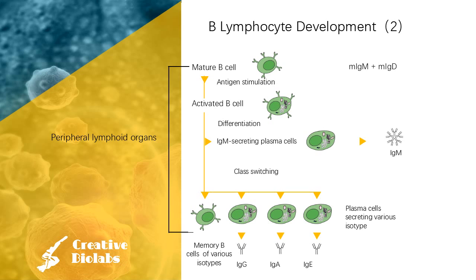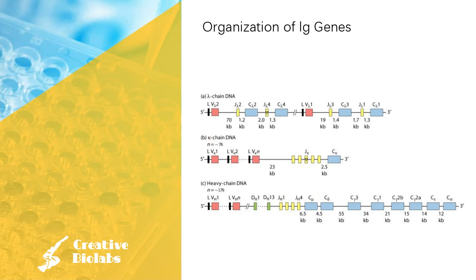Each cellular clone synthesized in a germinal center produces isotypes of the same class specific for a given antigen. During the evolution of immune responses, there is class switching in Ig classes from IgM to IgG, IgA, and IgE. One fraction of the B cell progeny develops into memory B cells. In this section, we detail the organization of antibody genes.